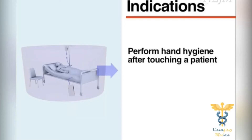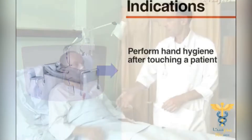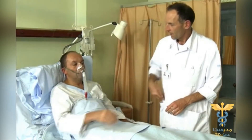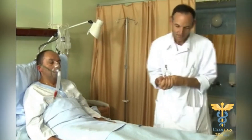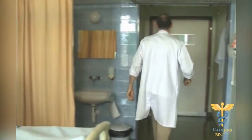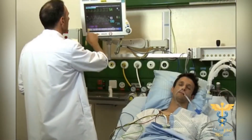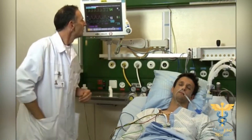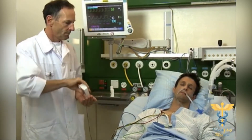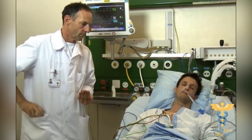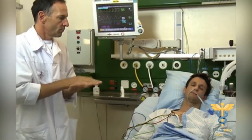You should also perform hand hygiene just after touching a patient and before touching any object located outside the patient zone, to limit the risk of germ dissemination to the healthcare environment. Even if you did not touch the patient, perform hand hygiene after touching objects in the vicinity of the patient — such as a monitor, bedside table, or bed rail — since these may also be contaminated by the patient's microbial flora.